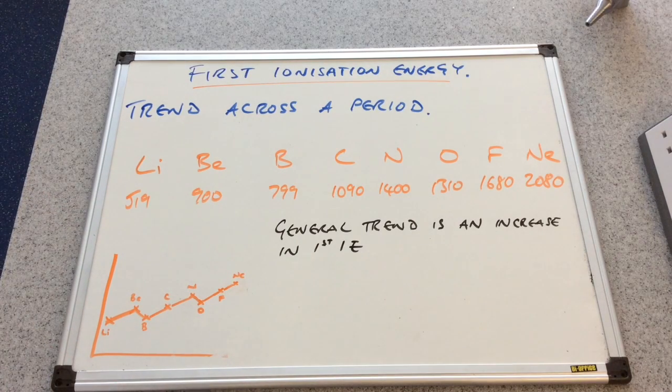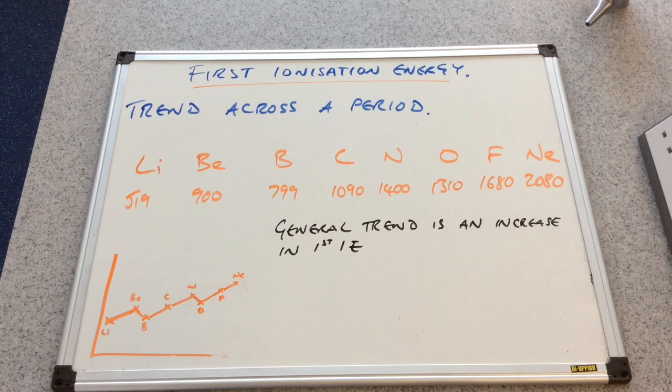It's obviously taking more and more energy each time in general to remove the outermost electron. So what's that telling us? The outermost electron must be being held more strongly each time.